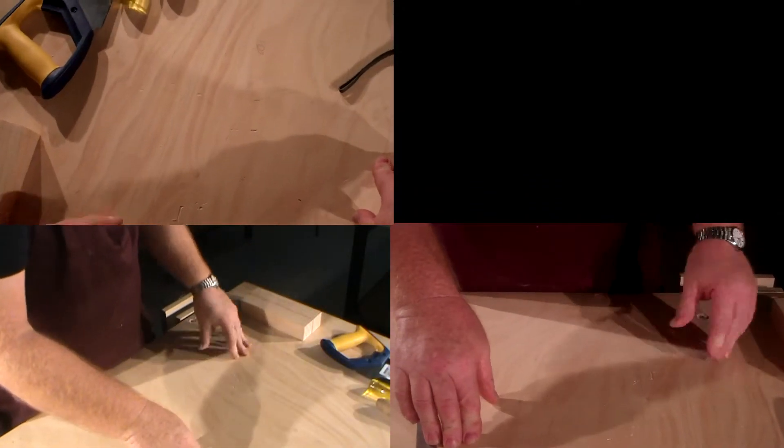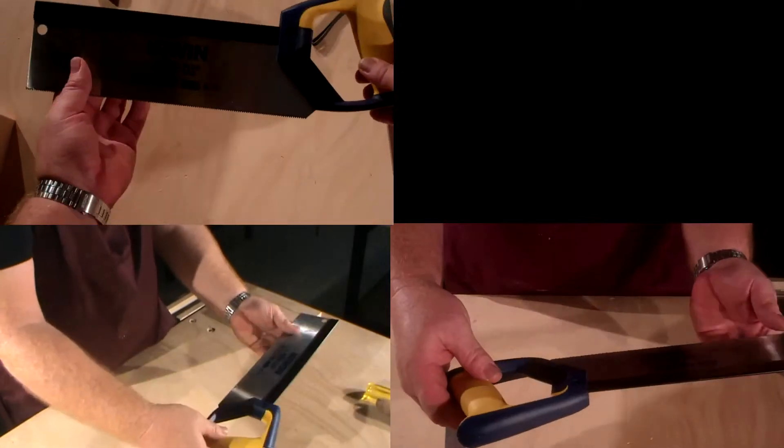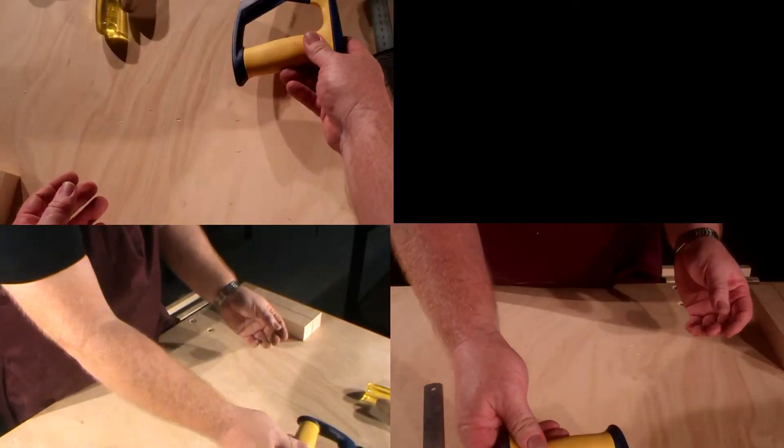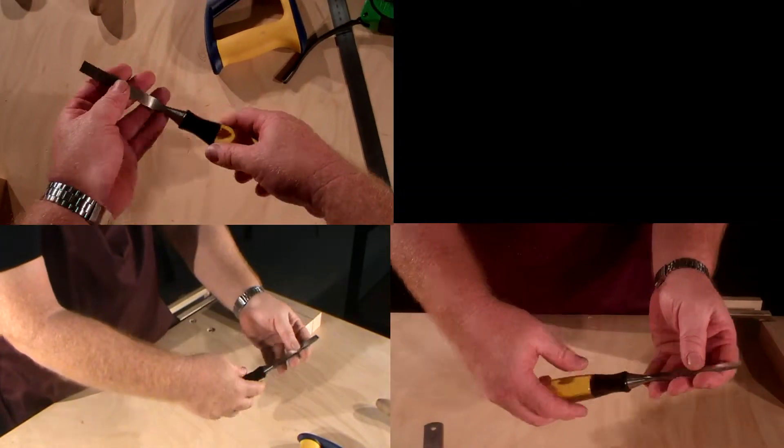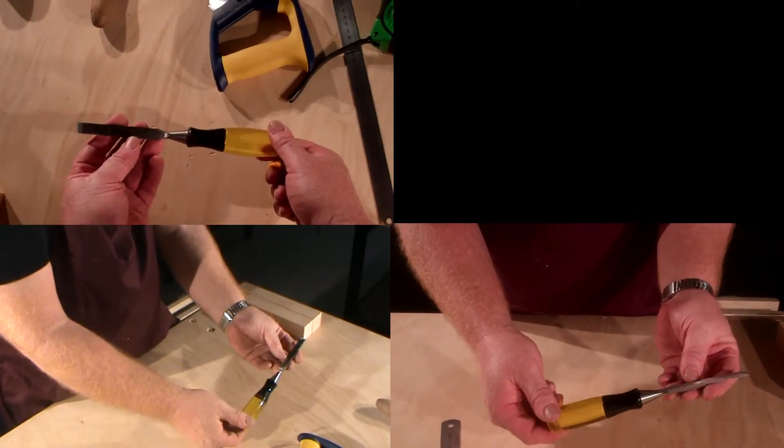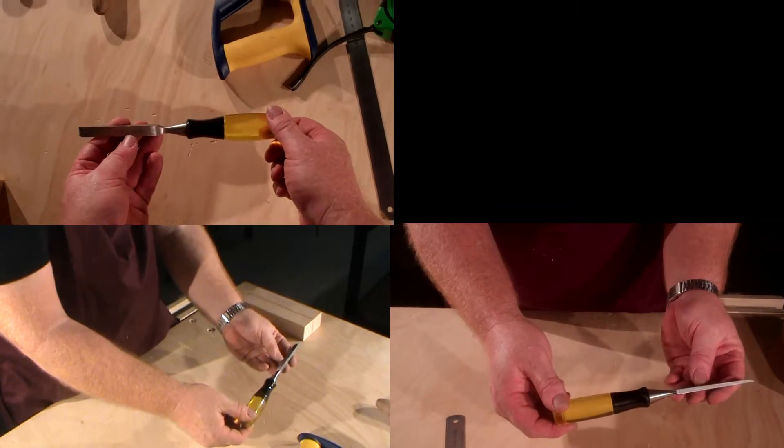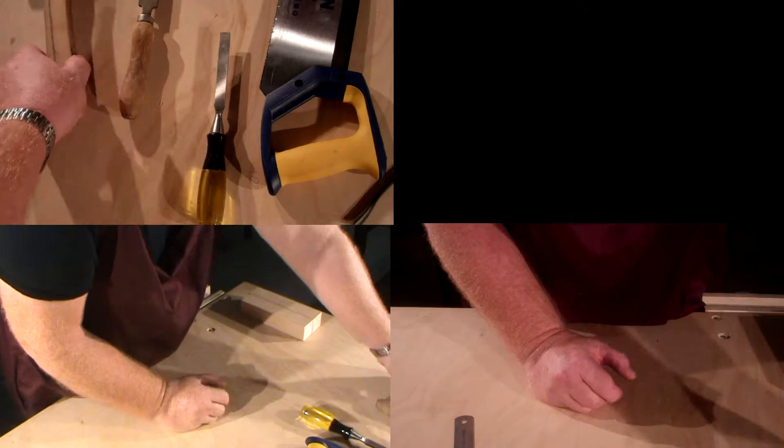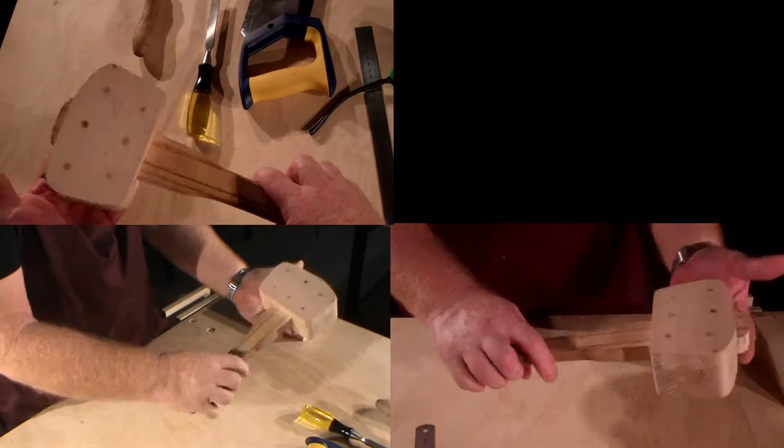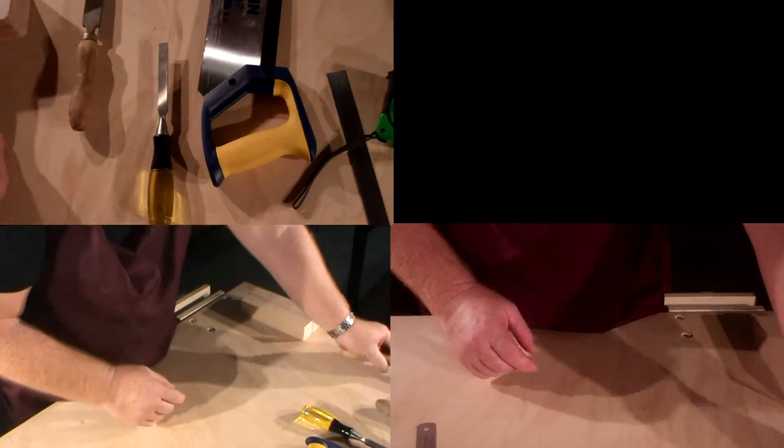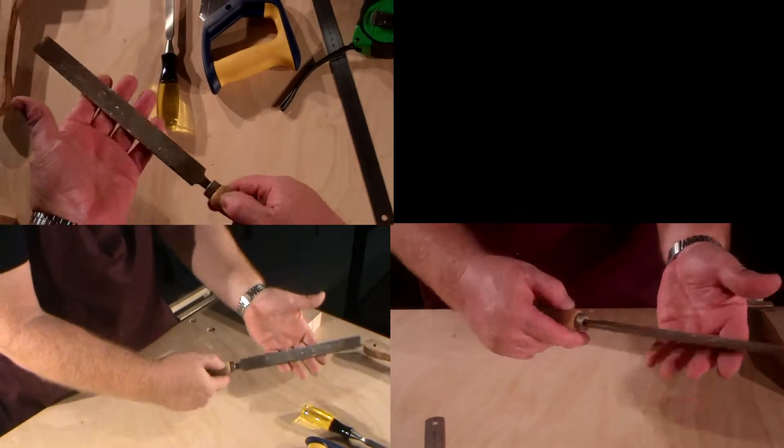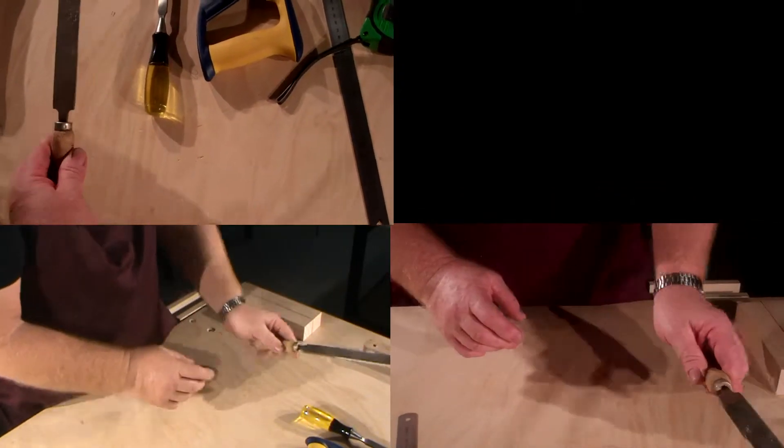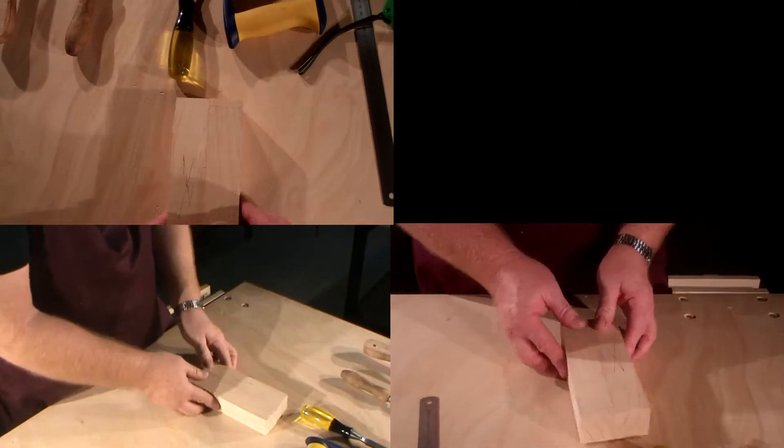The cutting tools we're going to be using are the tenon saw, the chisel - it's a 12mm chisel, the mallet, wooden mallet to go with our chisel, and the file with one smooth edge.